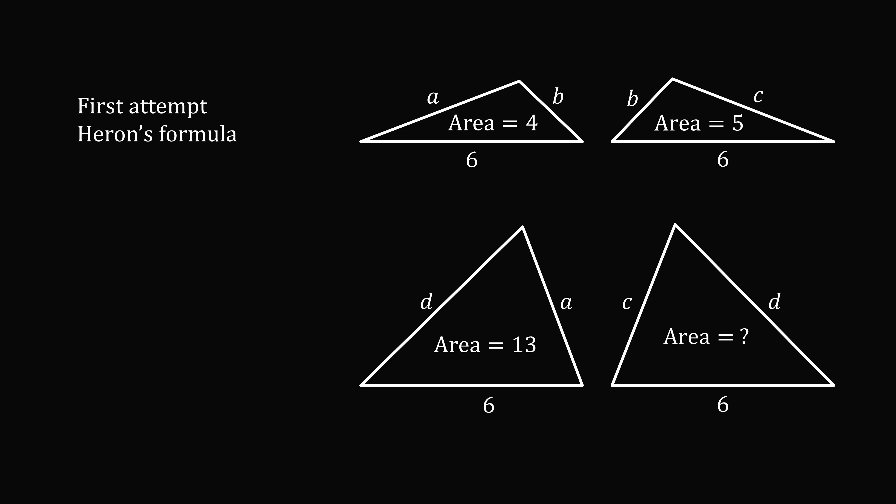On my very first attempt, I thought about using Heron's formula. So let's take the first triangle. We'll calculate its semi-perimeter, and then we will set this formula for the area, and we'll set it equal to 4. So I did this for each of the three triangles whose side lengths and areas are known. But it didn't go anywhere. I wrote out all these equations, and I couldn't figure out any way that it would translate into figuring out the area of the fourth triangle. So I had to scratch this whole approach.